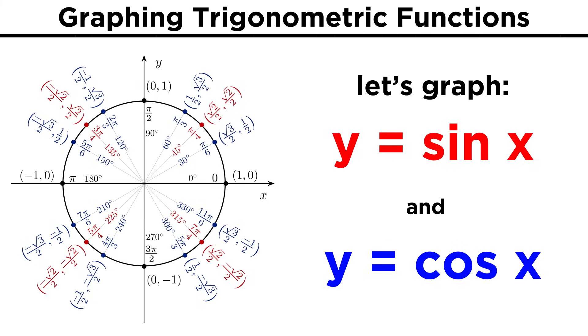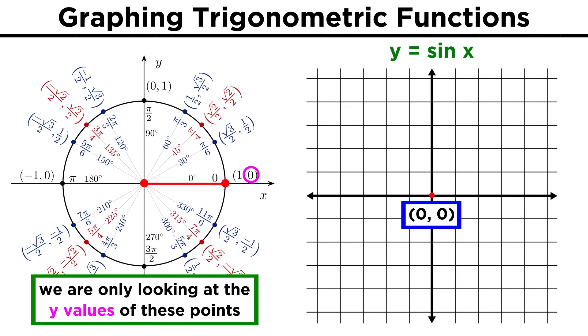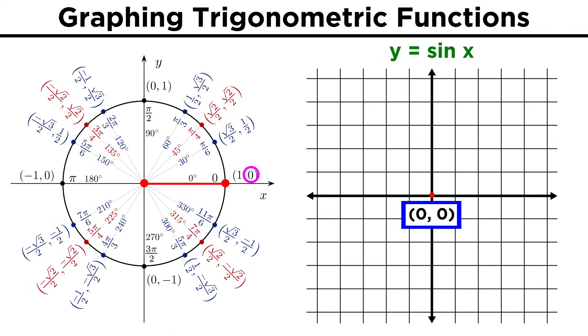Let's go ahead and graph the sine and cosine functions now, so we can see exactly what they look like. Let's bring up the coordinate plane, and also the unit circle. Looking at the y coordinates of these points, we can start to plot the graph of y equals sine x, going in multiples of pi over six. When x is zero, y is zero.